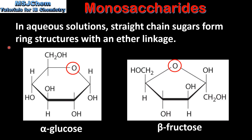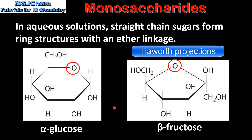Next we look at the ring structures of glucose and fructose. In aqueous solutions, straight chain sugars form ring structures with an ether linkage. On the left we have the ring structure of alpha glucose which has an ether linkage. On the right we have the ring structure of beta fructose which also has an ether linkage. These structures are known as Haworth projections. The structures of alpha glucose and alpha fructose can both be found in table 34 of the data booklet.